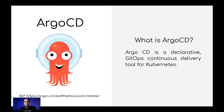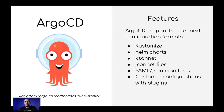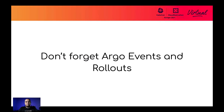Argo CD is a complement for Argo workflows, used specifically for continuous delivery and deployment, designed for Kubernetes. It supports different configuration formats like Helm charts, Kustomize, JSON files, YAML, or custom plugins. Don't forget Argo Events and Rollouts — they are part of the whole Argo ecosystem to define really nice CI/CD or MLOps workflows.